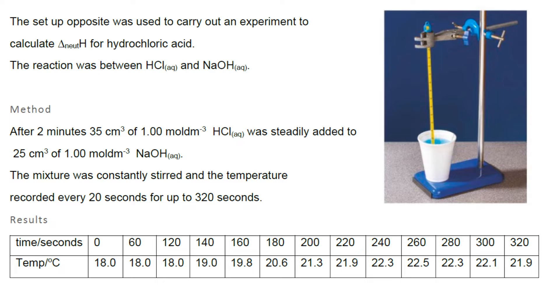After two minutes, 35 cm³ of 1.00 mol/dm³ HCl was steadily added to 25 cm³ of 1.00 mol/dm³ NaOH. The mixture was constantly stirred and the temperature recorded every 20 seconds for up to 320 seconds.